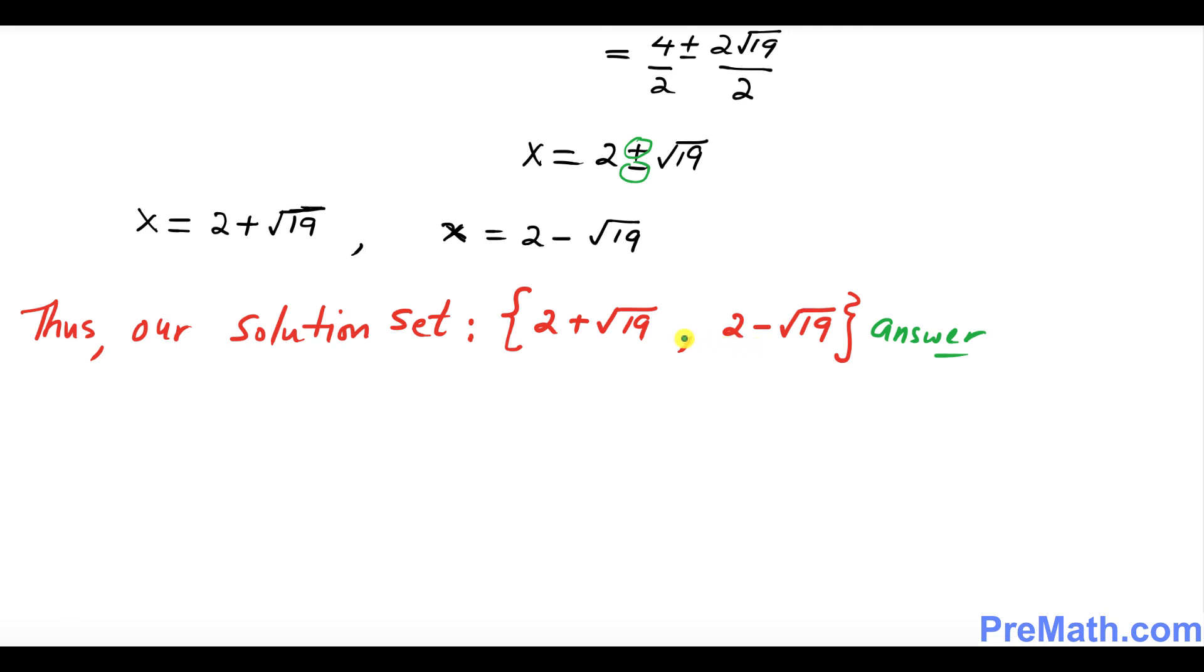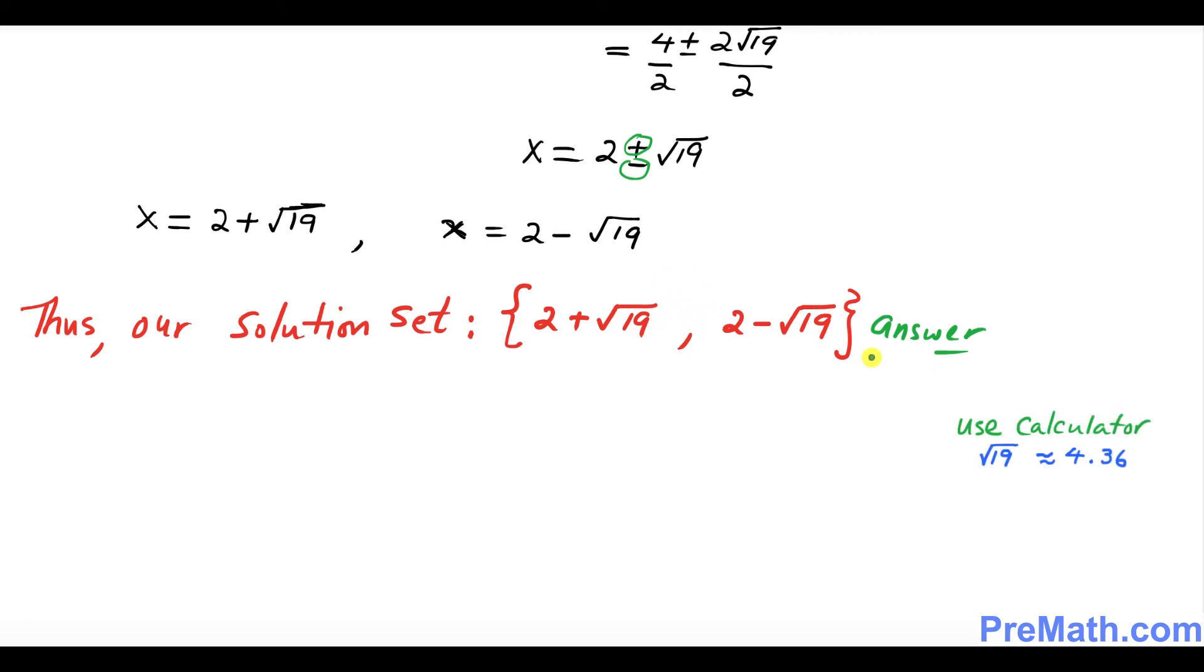However, if you want your solution in terms of decimal, then we can do that thing as well. And if we use a calculator, our value for square root of 19 turns out to be approximately equal to 4.36, and we can plug it in over here to get our decimal value. And this is our solution in terms of decimal.